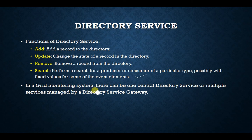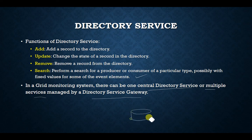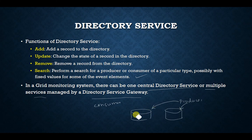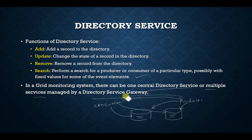In a grid monitoring system there can be one central directory service, or multiple services managed by a directory service gateway. There can be multiple producers and multiple consumers. Multiple producers can register event data in the directory services, consumers can contact any directory service for an event, and the actual event data can then be received directly from the producer.